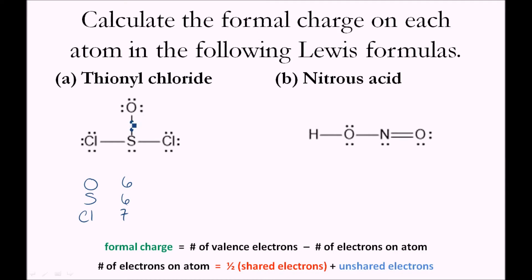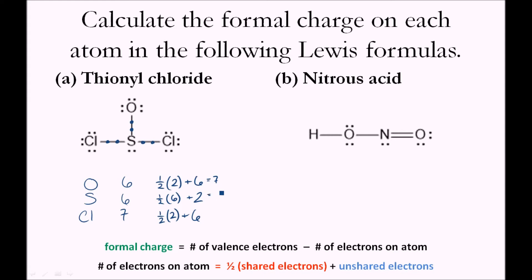Oxygen has two shared electrons in the bond with sulfur, so one-half times two, plus six unshared electrons. For sulfur, it has three bonds and six shared electrons, so one-half times six, plus two unshared electrons. Each chlorine has one bond with sulfur and six unshared electrons. So the number of electrons on oxygen is seven, for sulfur it's five, and for chlorine it's also seven.